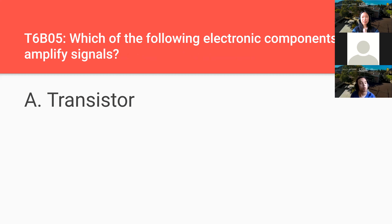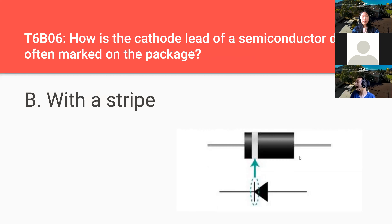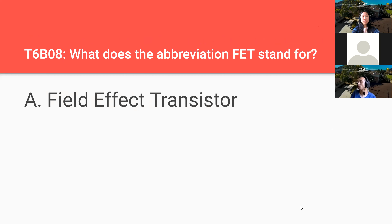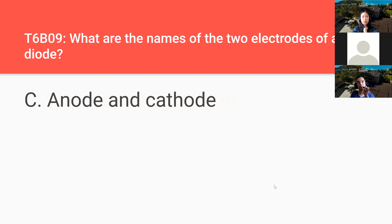By controlling the flow of current you can also amplify signals. How is the cathode lead of a semiconductor diode often marked on the package? With a stripe — the cathode is the negative side, so stripe is negative. What does the abbreviation LED stand for? Light emitting diode. What does the abbreviation FET stand for? Field effect transistor. What are the names of the two electrodes of a diode? Anode and cathode.